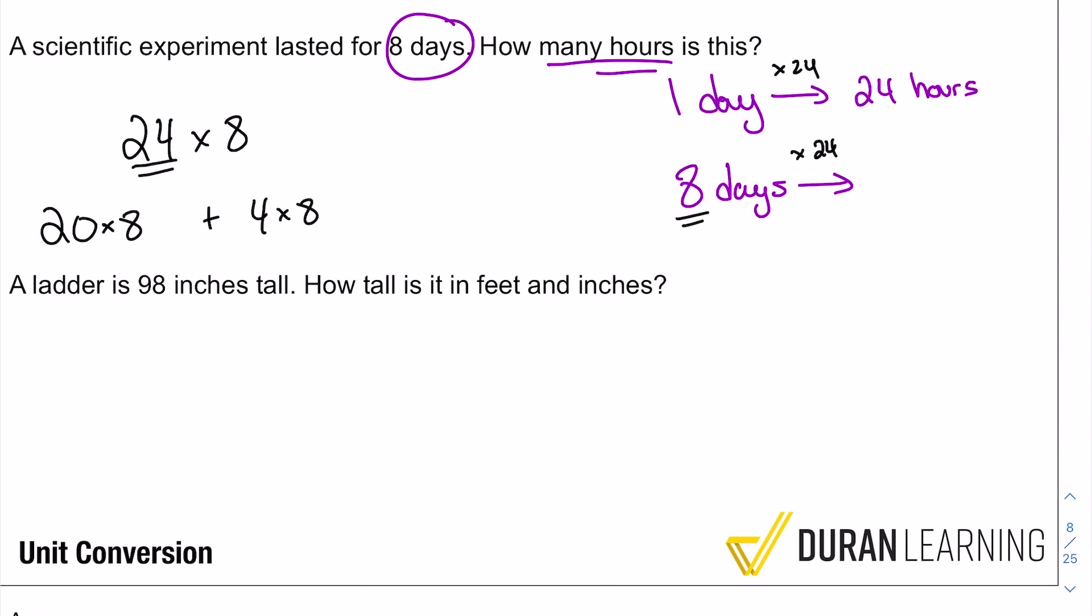and that would be the same as 20 times eight plus four times eight. I just split up the 24 into the tens and units, broke it apart and then brought it back together. So 20 times eight, that's going to give me 160. That's pretty easy because two times eight is 16. So put the extra zero for the 20 and four times eight. That's pretty easy too. That's 32.